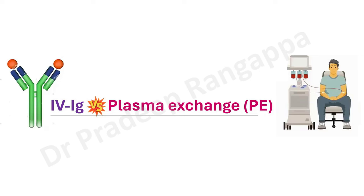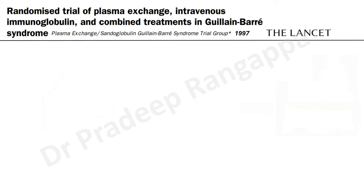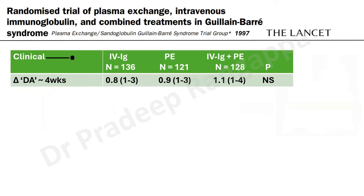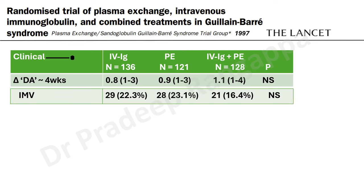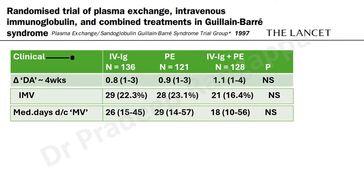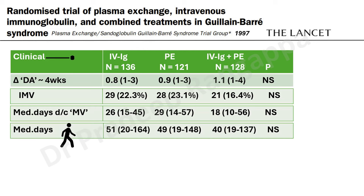When it comes to therapeutic armamentarium, there are two modalities: IVIG and plasma exchange. All the studies have shown there is no difference between IVIG and plasma exchange. The first study came in Lancet in 1997, comparing IV immunoglobulin with plasma exchange and with combination of IVIG and plasma exchange. Looking at change in disability at four weeks — there was no difference whether you use IVIG, plasma exchange, or combination. Patients who required ventilation also showed no difference, and there was no difference with regard to discontinuation of ventilation.